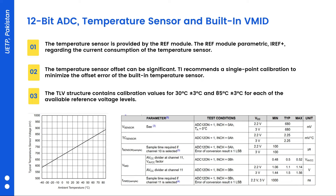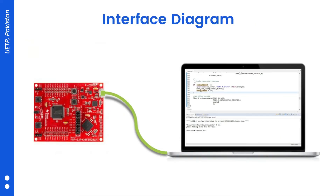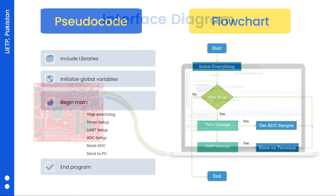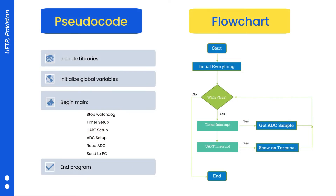It is providing us values continuously, so we are going to get the values of channel 10 continuously. The controller is connected with the UART using a UART cable to your laptop. Make sure that you have Code Composer Studio installed. I have tested this code on version 6 and version 10 and it is working well. This is just a basic pseudo code of the program.